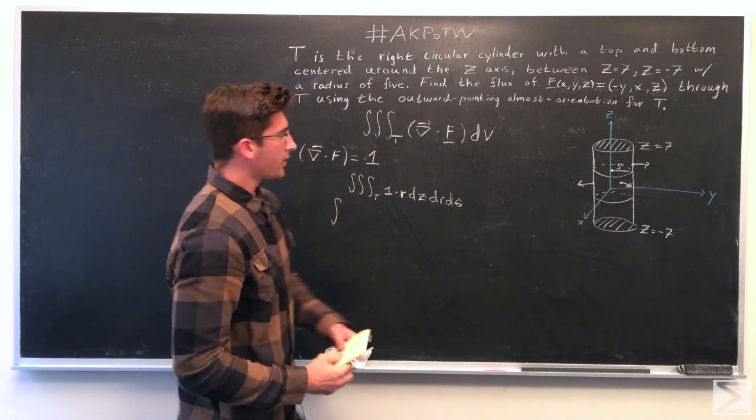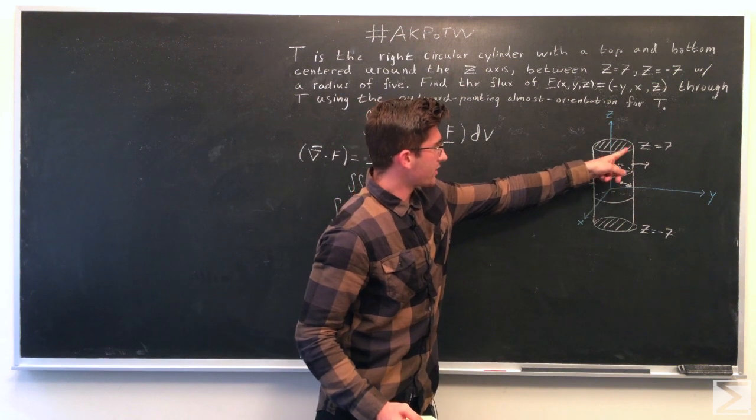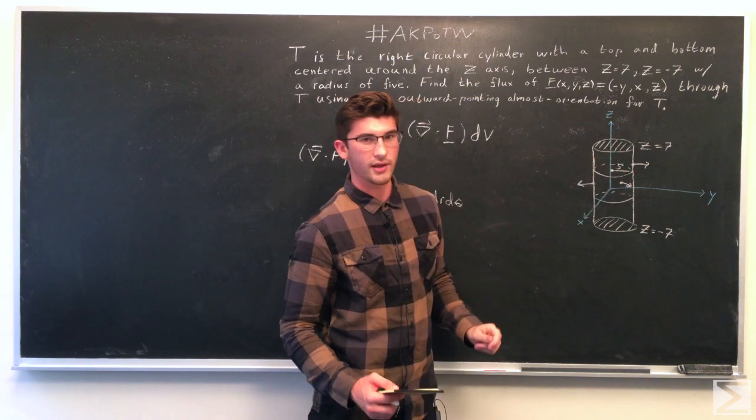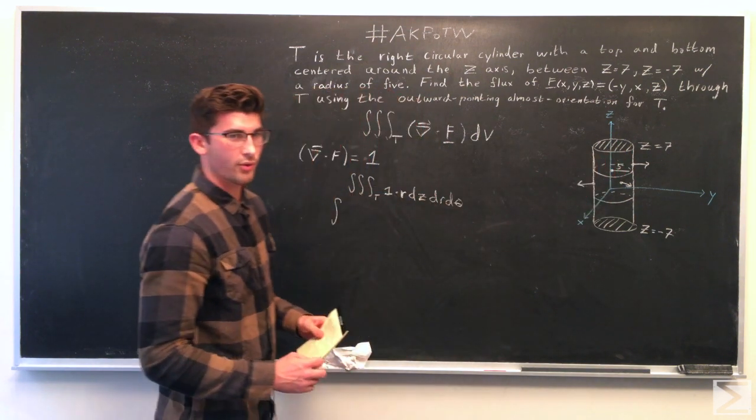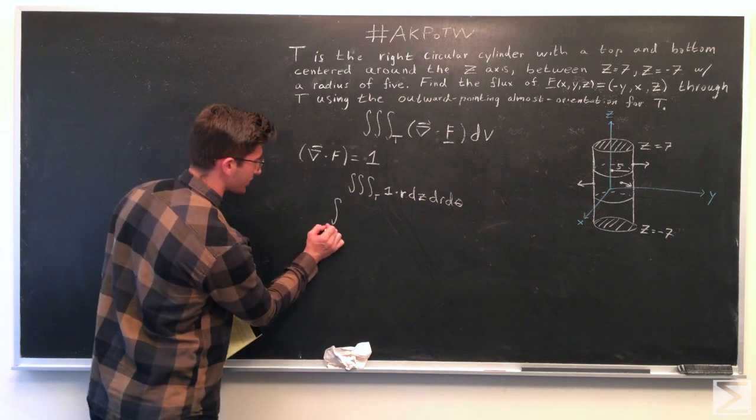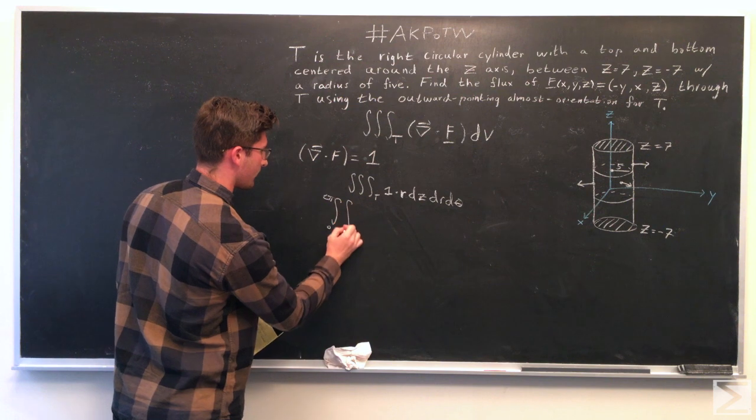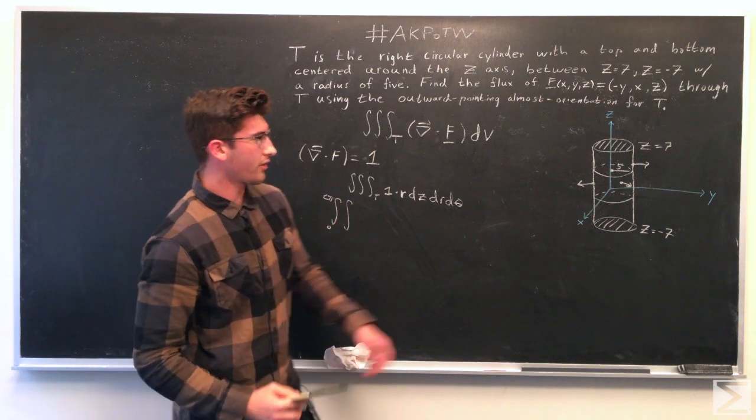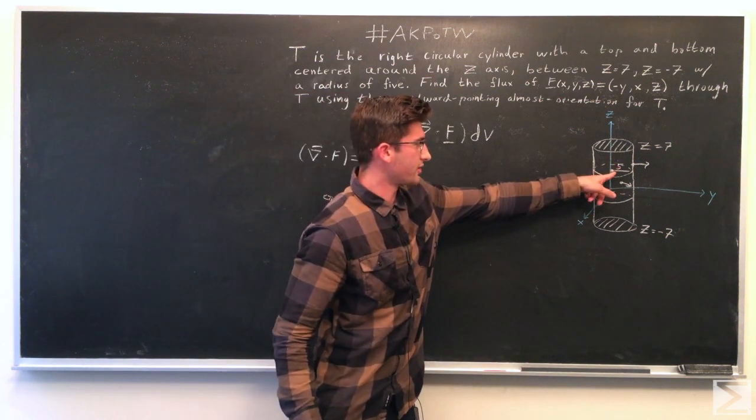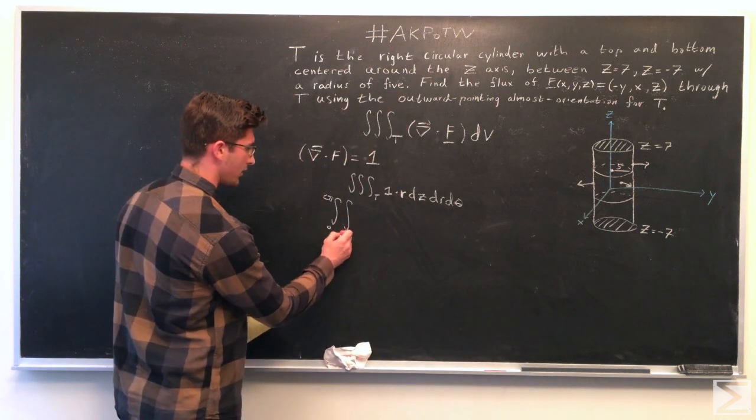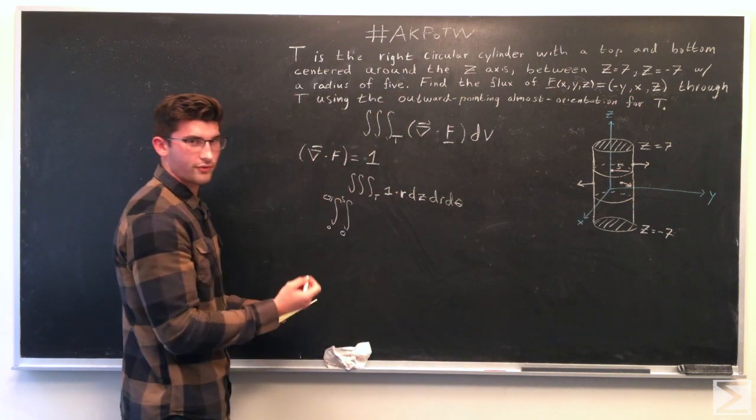So for d theta, we've got this radius of 5 and it's going to go all the way around for a cylinder. So it's from 0 radians to 2 pi radians, a full circle. And dr, the radius is 5, so it's going to go from the center out to 5. So from 0 to 5.